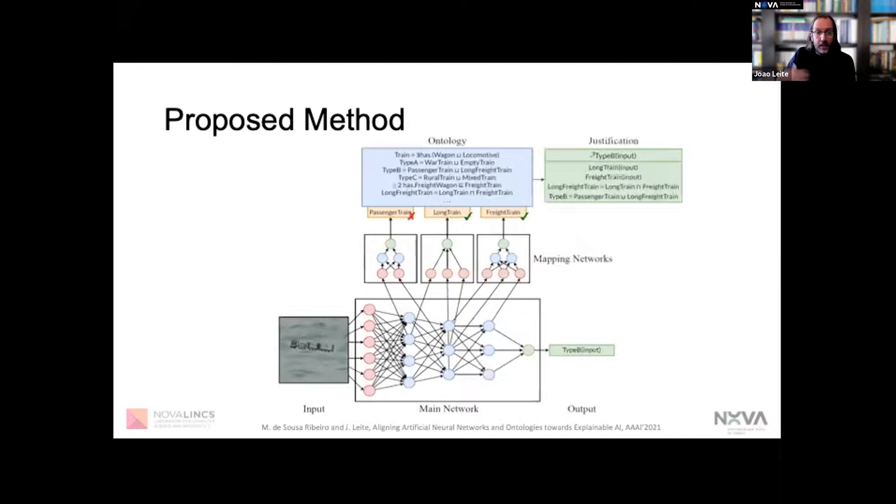Using logic-based reasoning methods together with the ontology and these observations, we can create justifications for the neural network's output. These would be essentially minimal sets of axioms from the ontology that, together with the observations, would entail the output of the neural network.